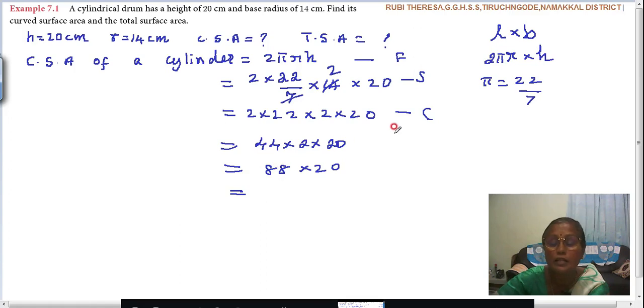Those who are unable to multiply it, I told you - double. Double means just adding two times instead of multiplying. So 8 plus 8 is 16. Here 16 plus 1 is 17. What is given here? 0. So 1760. What is the unit it is given?